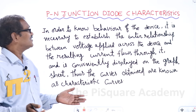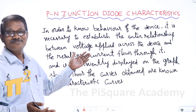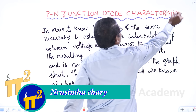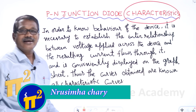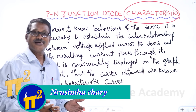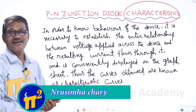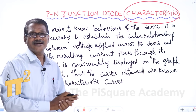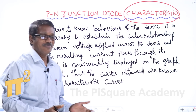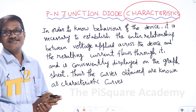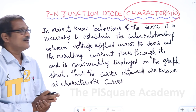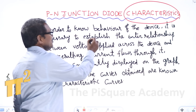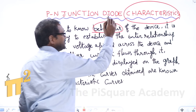In this session we are going to discuss the P-N junction diode characteristics. You might have seen characteristic curves for different electrical as well as electronic devices. The prime motivation to obtain the characteristic curves is in order to know the behavior of the device.